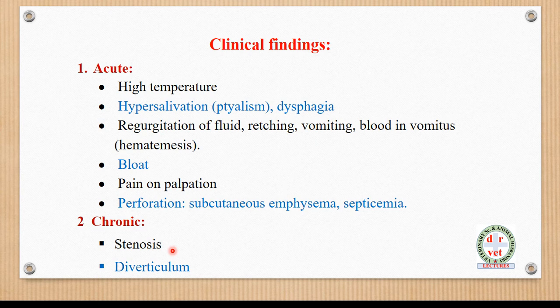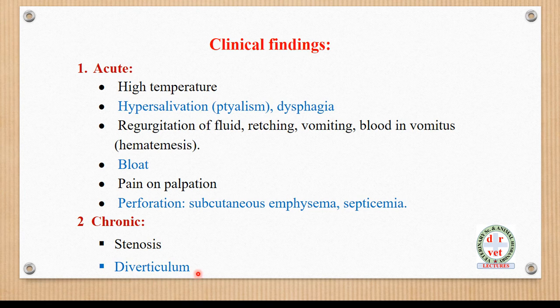In chronic cases, due to the deposition of fibrous tissue, there is stenosis and constriction of the lumen of the esophagus, which is also a serious condition affecting swallowing. Before the site of stenosis, there is accumulation of food in the esophagus, causing dilatation of the esophagus proximal to the stenosis, which is called a diverticulum.